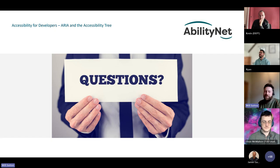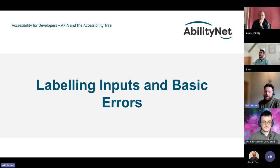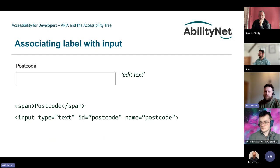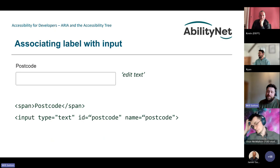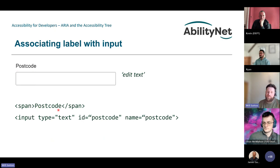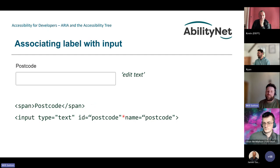Next we'll look at labeling inputs and basic errors. We've talked about giving accessible names to buttons, but now we'll look at how to give form elements accessible names — specifically associating labels with inputs. We can use native HTML: in an example with span text 'Postcode' and an input below, it visually looks like a label but programmatically there's no association, so an assistive technology user focusing that input wouldn't know what it's for.